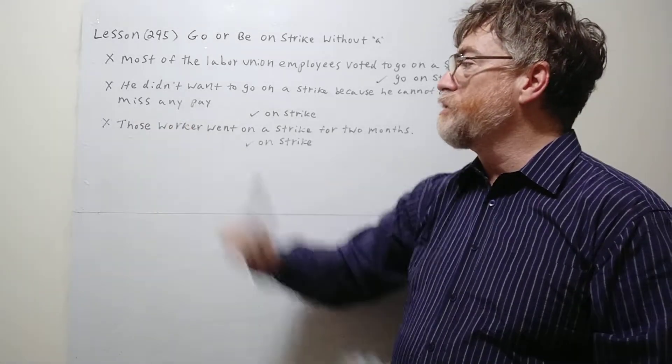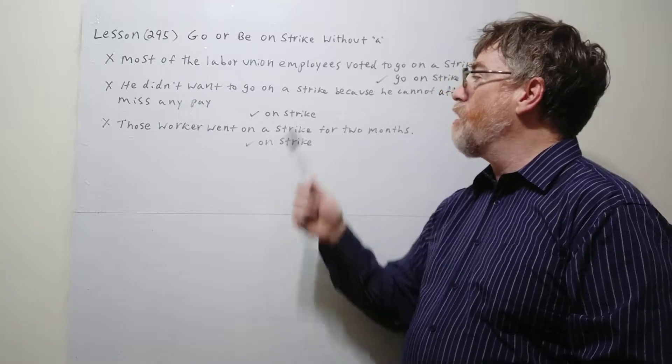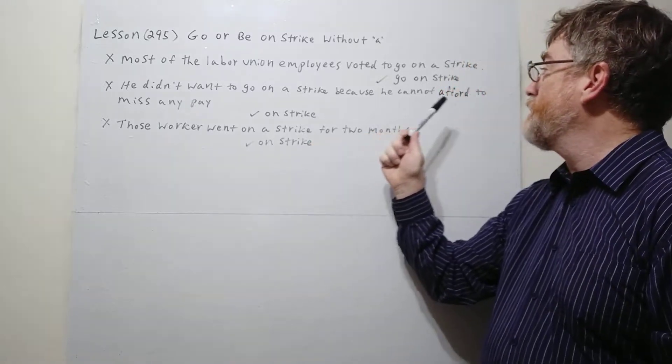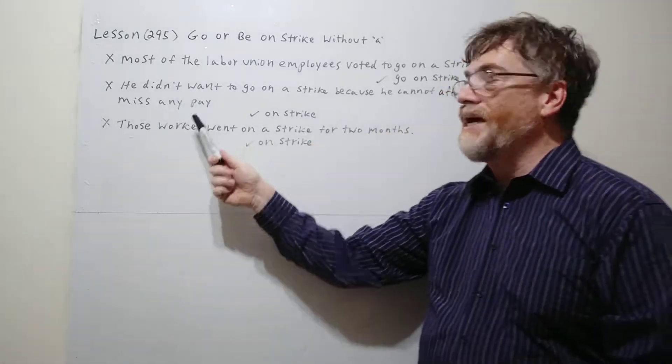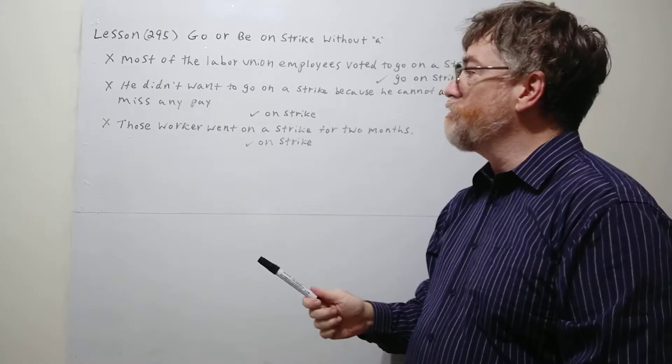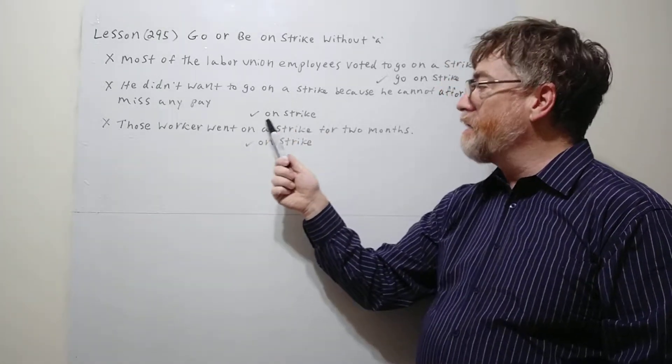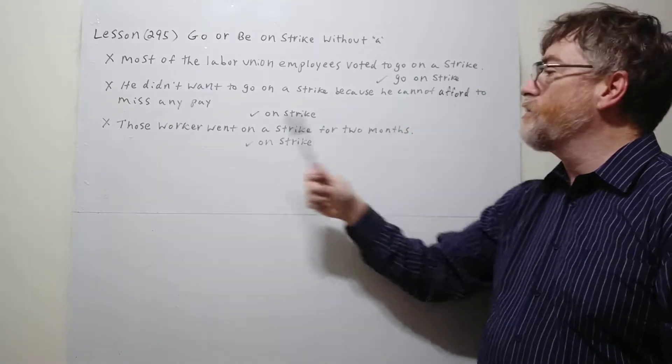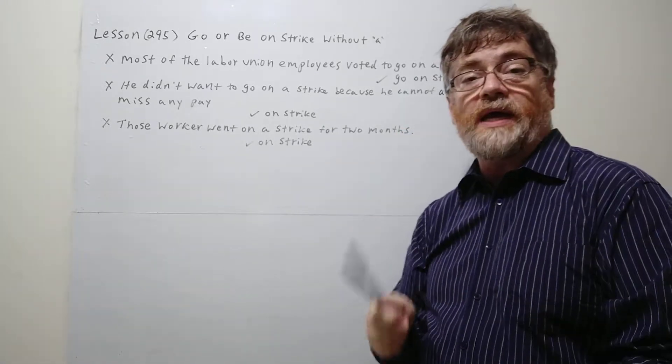Take a look at the second one. Again with the X, this is wrong. He didn't want to go on a strike because he cannot afford to miss any pay. Again you should say he didn't go on strike because he couldn't afford to miss any pay. So again, no a.